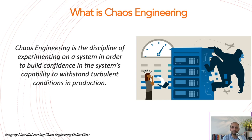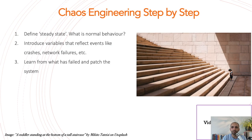At the beginning, chaos engineering was for big companies like Netflix, but currently we are seeing startups also needing this kind of practice to make sure they can give a good experience to their customers. Let's talk about chaos engineering step by step. First, we should define what we call the normal behavior of our application, microservice, or API server.